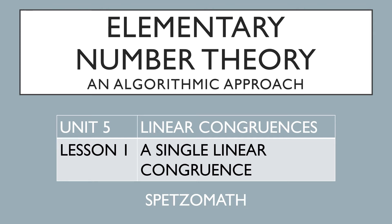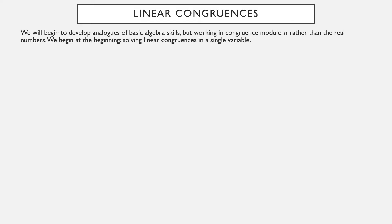Beginning this fifth unit regarding linear congruences, we're going to address just one at a time. What we're going to be doing is developing analogs of old algebra skills, but instead of trying to solve equations where there is a variable x, we're going to be trying to solve equivalences where there is a variable x, starting with linear congruences with one variable.